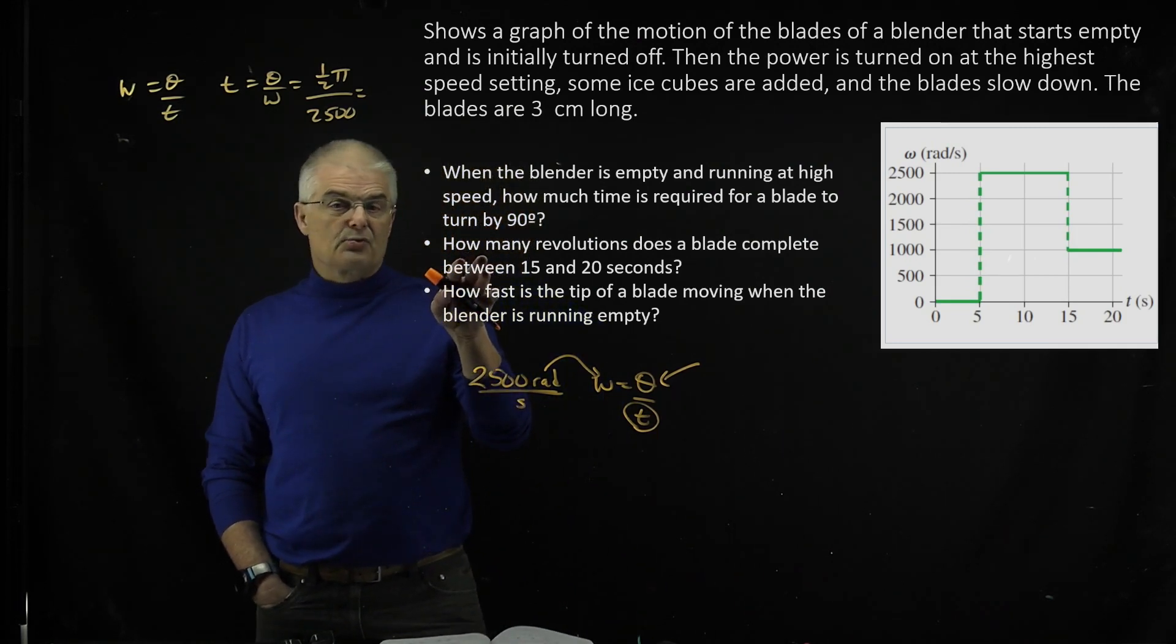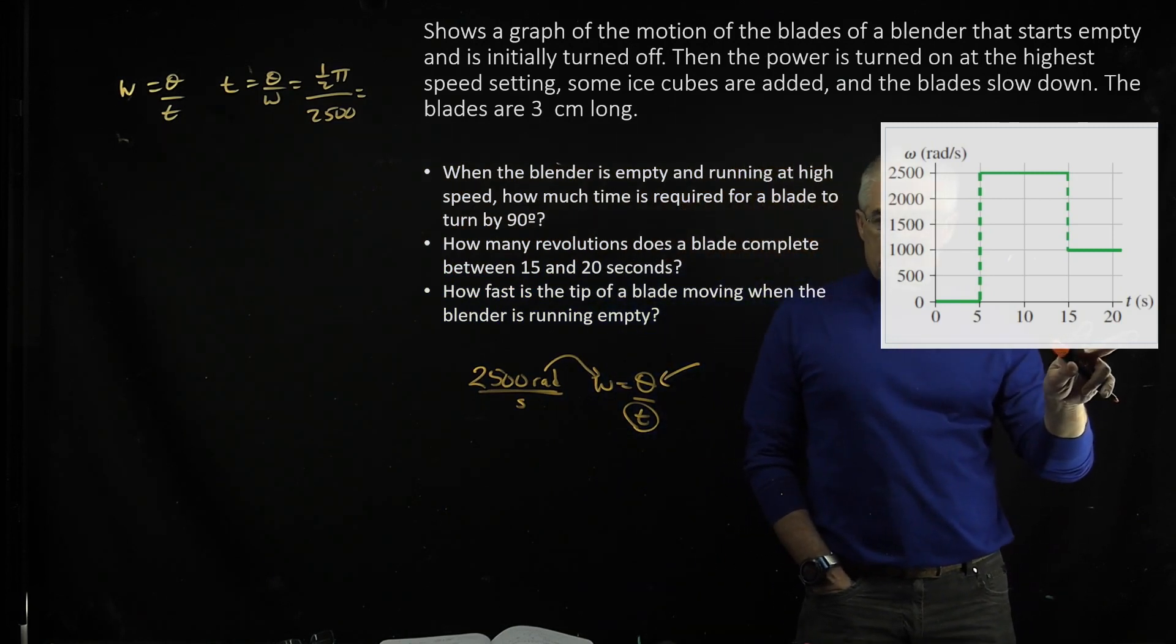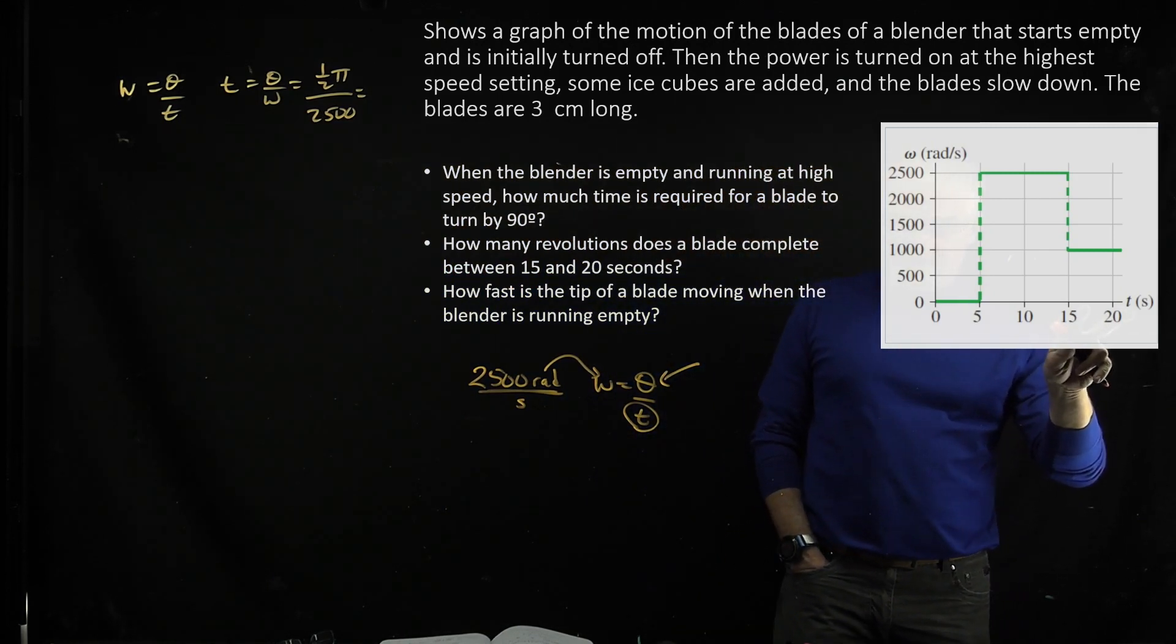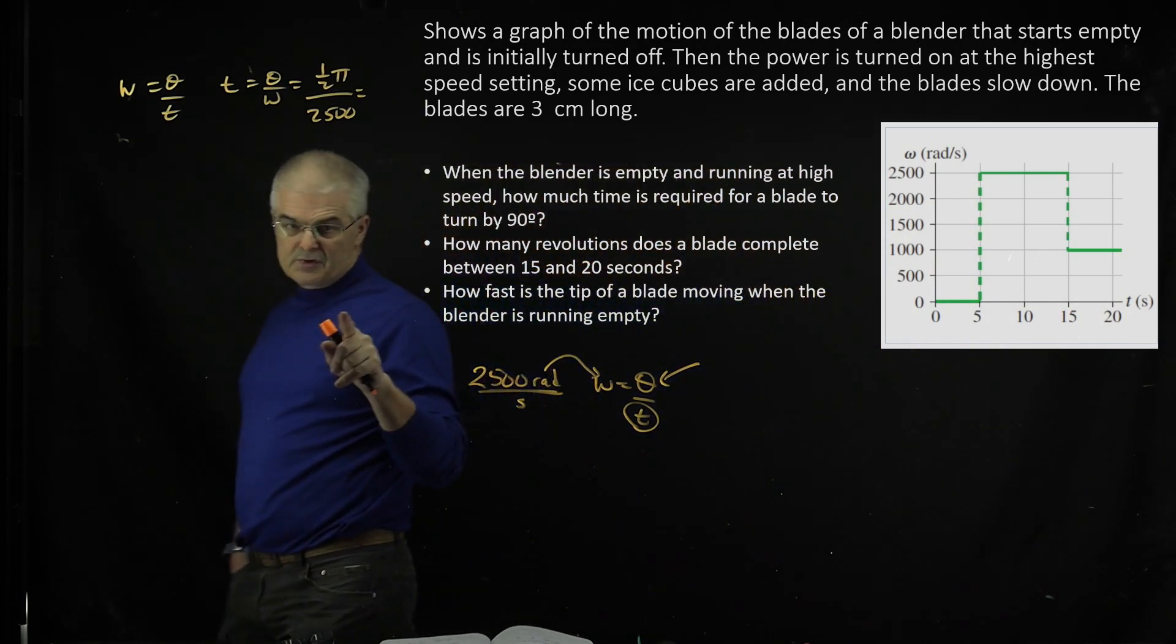For question B, how many revolutions does a blade complete between 15 and 20 seconds? So now you're in the last segment here from 15 to 20 seconds. We know it's doing so many rad/s.